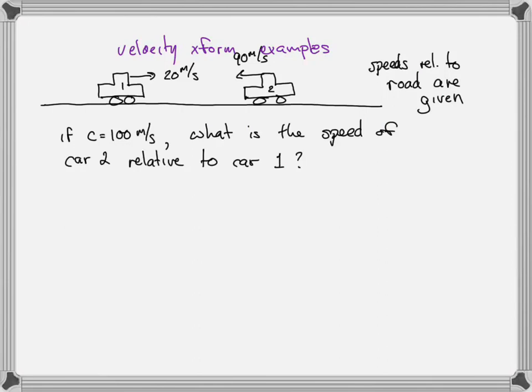So let's just make the speed of light low compared to the cars so that we can see the relativistic effects. So let's say C is 100 meters per second. We're not losing any generality here. We're just making the speed of light low so we can see the relativistic effects.